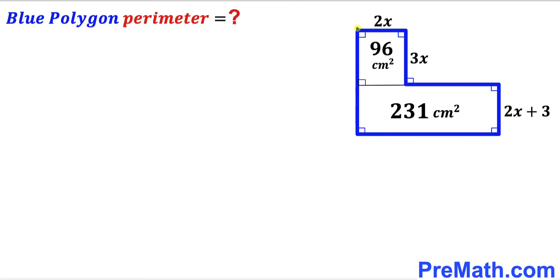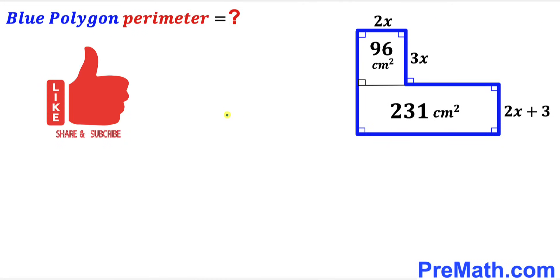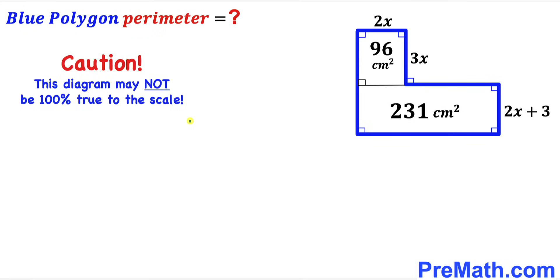The horizontal segment length is 2x, the vertical segment length is 3x, and this vertical segment length is 2x plus 3. Our task is to calculate the perimeter of this blue polygon. Please keep in mind that this figure may not be 100% true to scale.